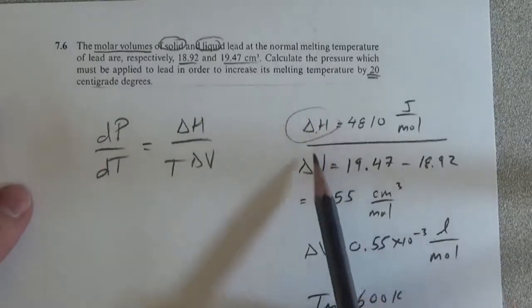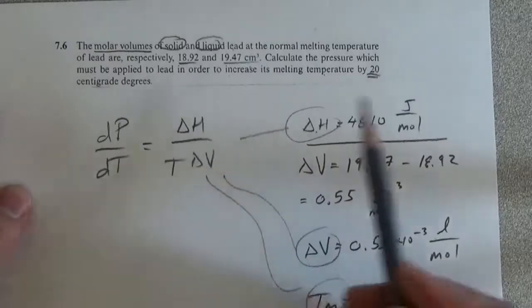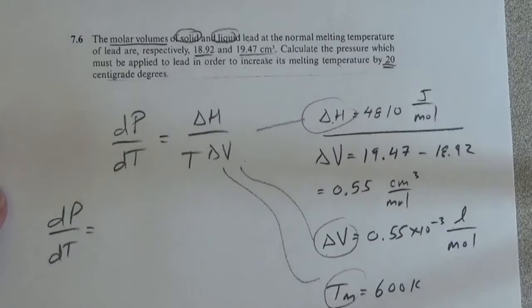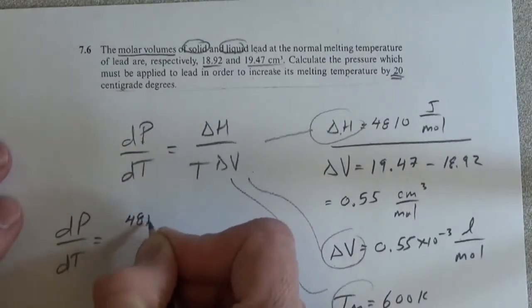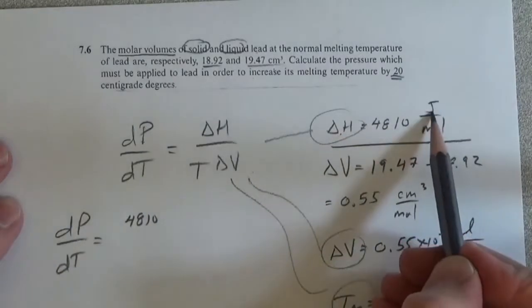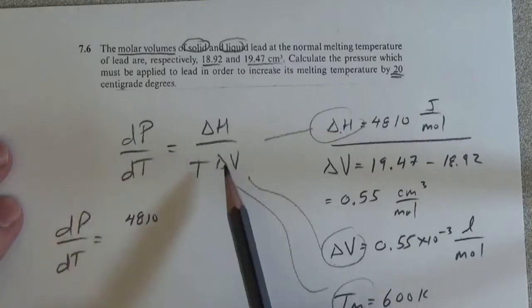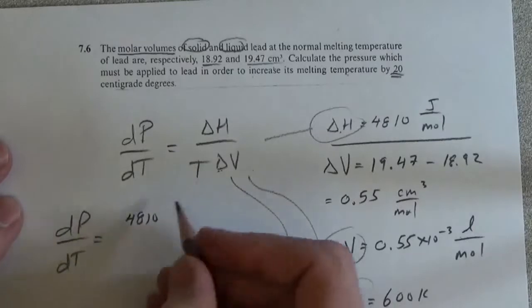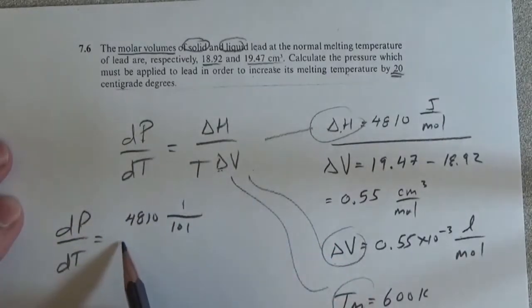So putting these in to here, we get dp dT is equal to 4810, and look this is joules per mole, and we're dealing with pressure and volume in terms of liters, so this has to be divided by 101 to convert from joules to liter atmospheres.